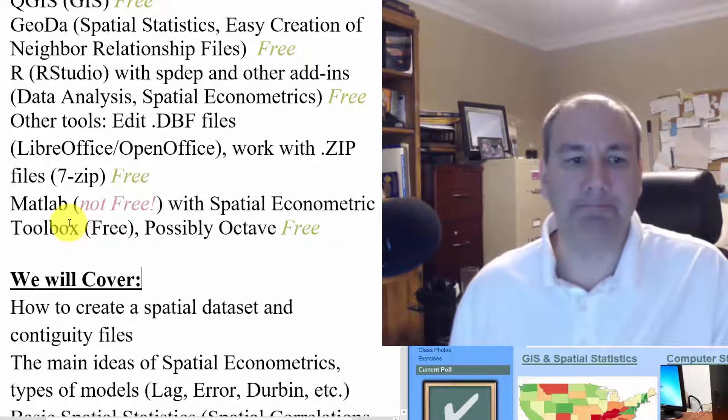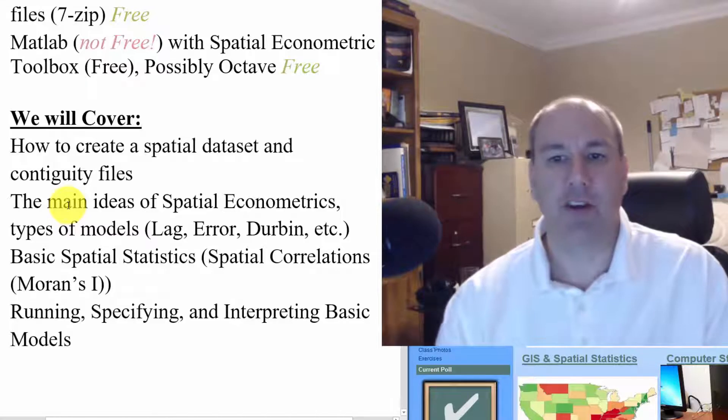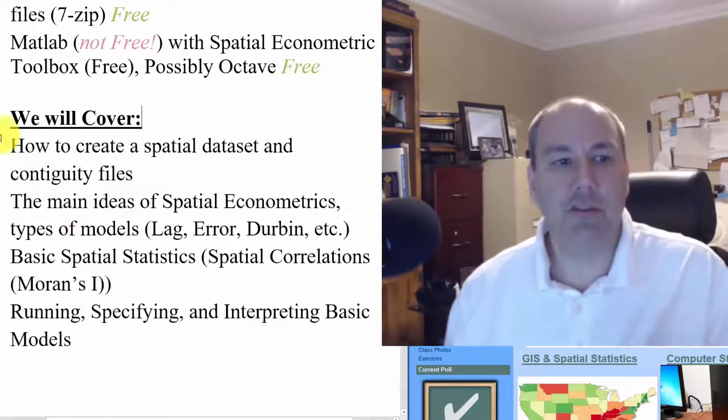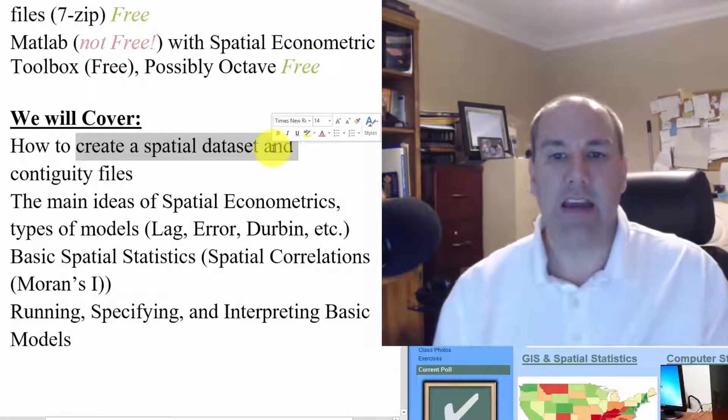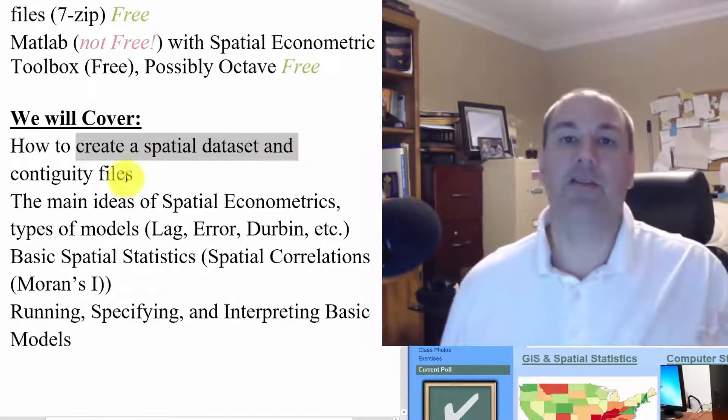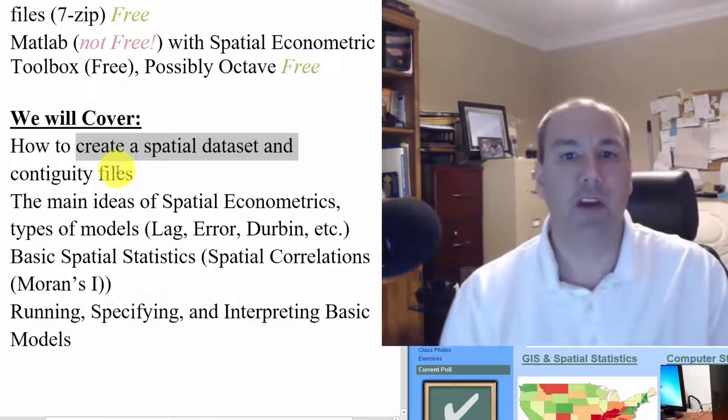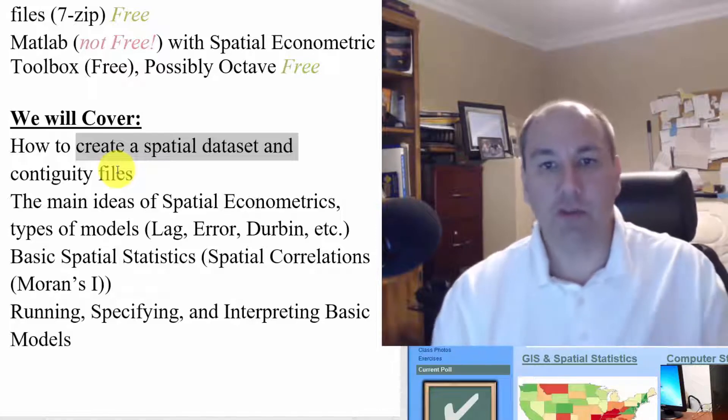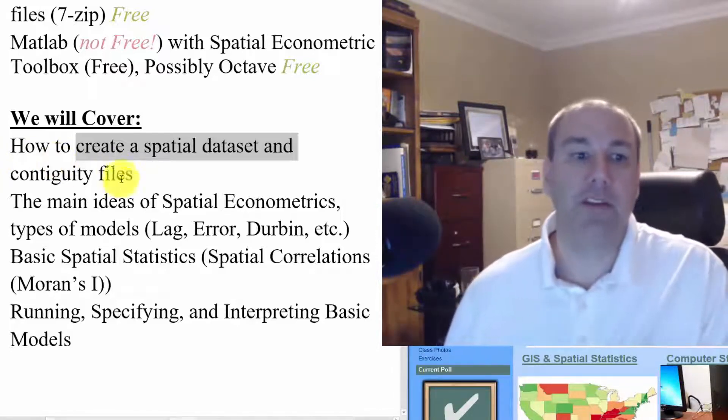So what I'm planning on covering is some basic GIS, how to take data, map it, visualize what's going on, how to use the GIS to create a spatial data set to get all the variables you need in a spatially referenced way, and then take those map files and create what's called a weights matrix so that we can mathematically represent which areas are neighbors, which areas are going to be spatially related to others, and we'll talk about some different ways to do that.